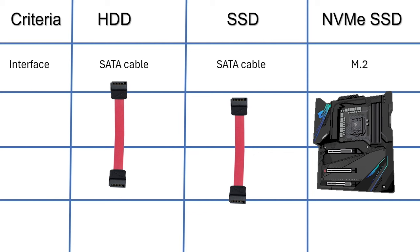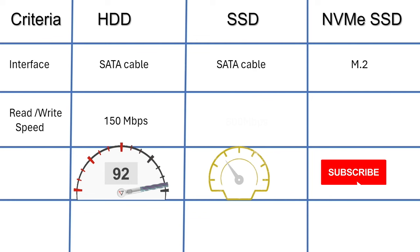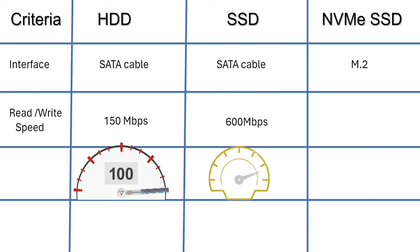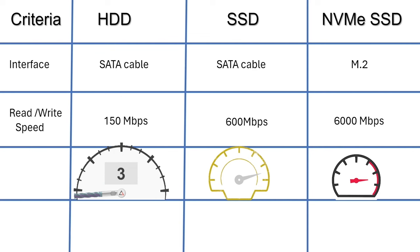Let us briefly compare all three types. HDD and SATA SSD use a SATA cable to connect to the motherboard, whereas NVM Express SSD does not use any cable — it uses an M.2 slot. HDD can read and write at a maximum speed of 150 Mbps. SATA SSD can achieve a maximum speed of 600 Mbps, though the SATA cable limits it. If we use an NVM Express slot, the SSD can read and write at a maximum speed of 6,000 Mbps.